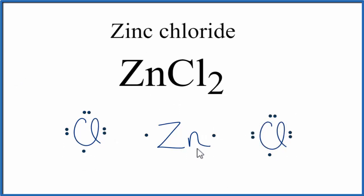So we said the metal, the zinc, would transfer electrons to the nonmetal. So this electron here will go to this chlorine, and then this electron will go over here to this one.